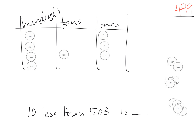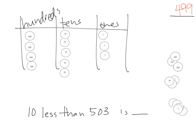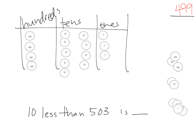So we're going to cash in this hundred for ten tens. Teachers, ask your students: if I cash this hundred in, what do I get? We want kids to say ten tens. We lay out ten tens — one, two, three, four, five, and one, two, three, four, five — in that ten-frame shape. Now can we take away ten? Yes! We take away a ten, and we end up with 493. Ten less than 503 is 493. This is not a trivial problem for second graders.